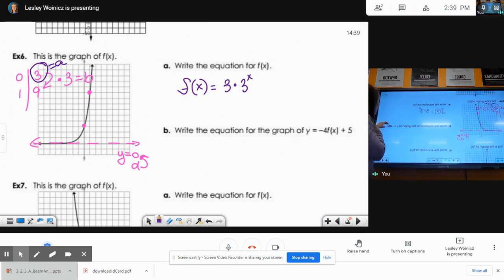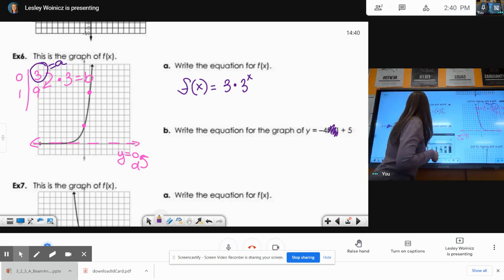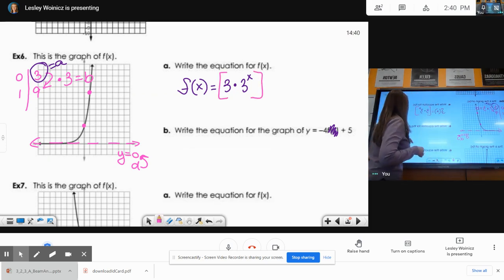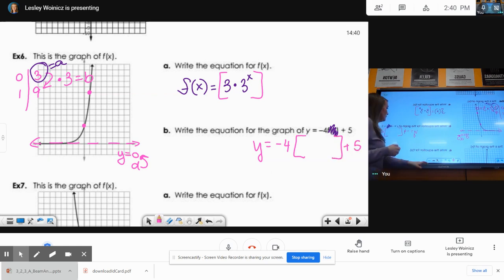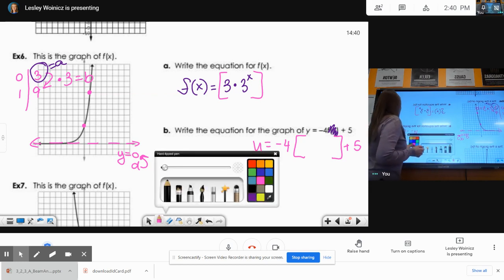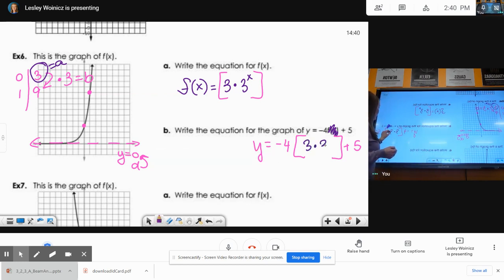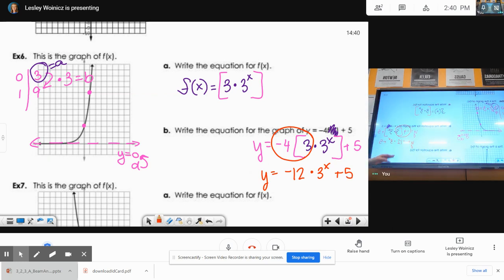Now I have to plug that in for f of x, wherever I see f of x. So it will be y equals negative 4 times something plus 5. So I'm plugging in my 3 times 3 to the x, and then I have to multiply my coefficients. So that is y equals negative 12 times 3 to the x plus 5. Now we're done. That's pretty much all you need to know for scale changes.